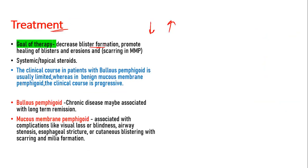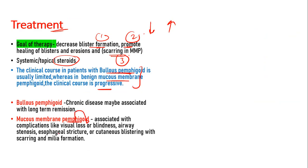Indirect immunofluorescence is also positive with circulating antibodies in 80% of cases. The goal of therapy is to decrease blistering and promote healing. In cicatricial pemphigoid, it is additionally to prevent scarring. Treatment involves systemic or topical steroids. Bullous pemphigoid is limited in course, whereas mucous membrane pemphigoid is progressive, with associated complications of blindness, airway stenosis, esophageal stricture, and cutaneous blistering. Bullous pemphigoid is associated with long-term remission.